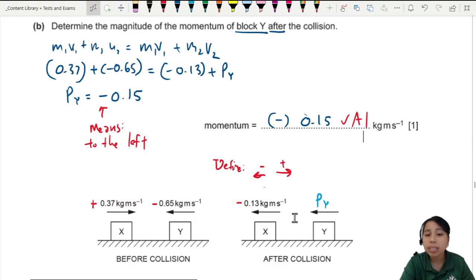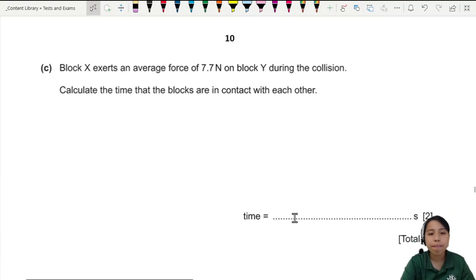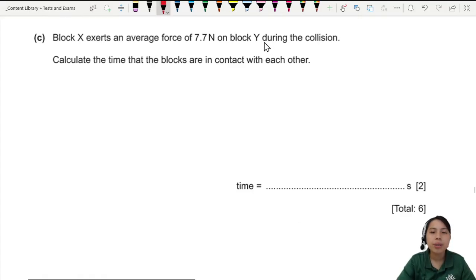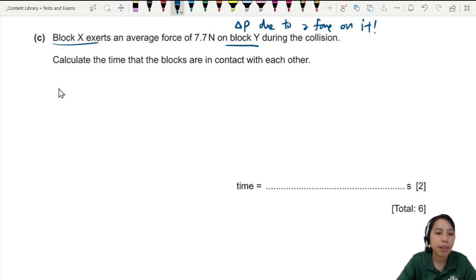Okay, so block Y has a change in momentum, very good. Block X exerts average force on block Y. So just now we have a change in momentum, right? That's the explanation. Block Y will experience a change in momentum due to a force on it. And who gives the force? Block X exerts a force. So you can think of it this way: this is block Y, block X came and pushed a force to it. This force due to X.